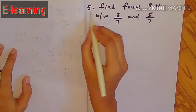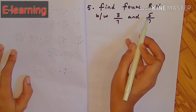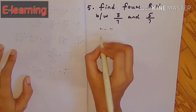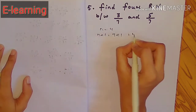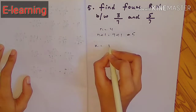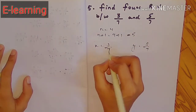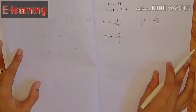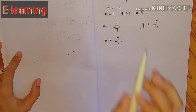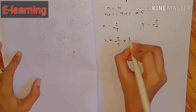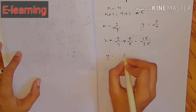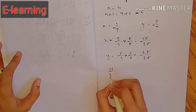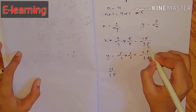अब start करते हैं दूसरा question 5। Q5 में हम directly करेंगे — क्योंकि जब भी denominator same हो तो हम directly सिर्फ x और y में 5 से ऊपर नीचे multiply करते हैं। 5 से multiply करें: x = 3/7 into 5/5 = 15/35; y = 5/7 into 5/5 = 25/35। इन दोनों के बीच में बहुत gap है।